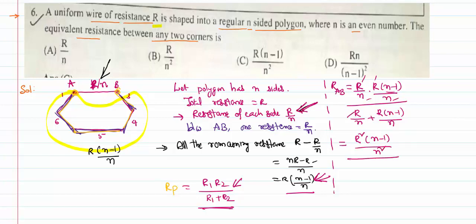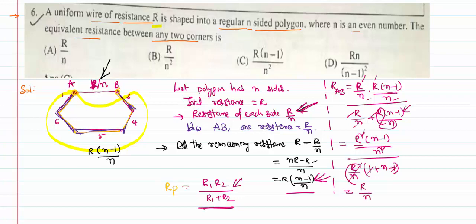In the denominator I take r/n as a common factor: r/n × (1 + (n−1)). The 1 and (n−1) add up, and the +1 and −1 cancel appropriately. One factor of r/n in the numerator cancels with the r/n in the denominator, leaving r(n−1)/n². So the equivalent resistance is r(n−1)/n².